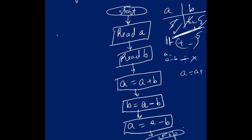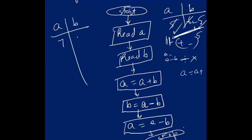We will try to draw a memory map of this. A and B — I will take another example: A will be equal to 7 and B will be equal to 8.